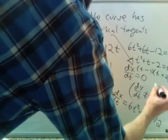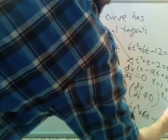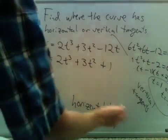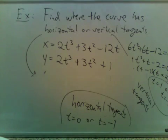So this is 0 when t equals 1, or t equals negative 2. On the right it should say t equals 1, or t equals minus 2.